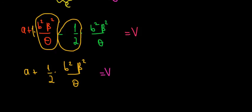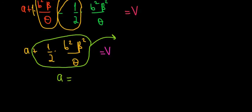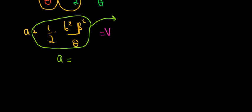And now we want to calculate just A, meaning we'll take this other term to the other side. So this one will go to the right side with a negative sign. So A equals V minus one-half times B squared beta squared divided by theta.